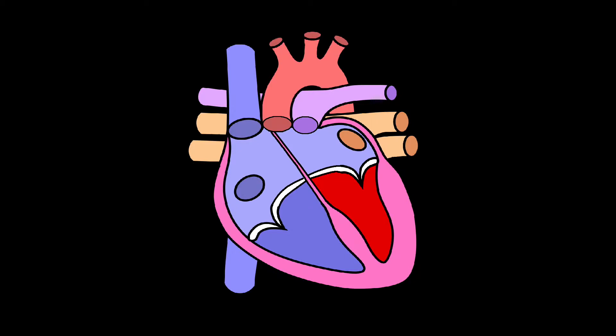This electrical impulse begins in the sinoatrial node or the SA node. The SA node is the natural pacemaker of the heart. It sets the rate and pace of heart contractions.